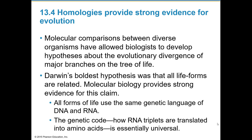Molecular comparisons between diverse groups of organisms have allowed biologists to develop hypotheses about the evolutionary divergence of major branches on the tree of life. Darwin's boldest hypothesis was that all life forms are related. Molecular biology supports this: all forms of life use the same genetic language of DNA and RNA, and the genetic code — how RNA triplets are translated into amino acids — is universal among living things.